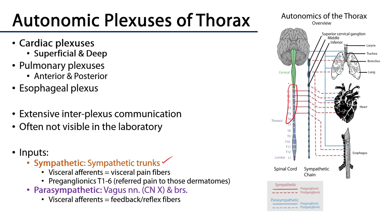It's important to note that visceral afferent fibers that accompany sympathetic fibers are visceral pain fibers. Those visceral pain fibers are ultimately coming back to those levels, and any of the dermatomes served by those levels are candidates for referred pain from the organs those levels serve. The parasympathetic innervation for the thoracic viscera will all come from the vagus nerves — cranial nerve 10 — and branches of the vagus nerves. The visceral afferents accompanying vagus nerve fibers conduct feedback and reflex information.